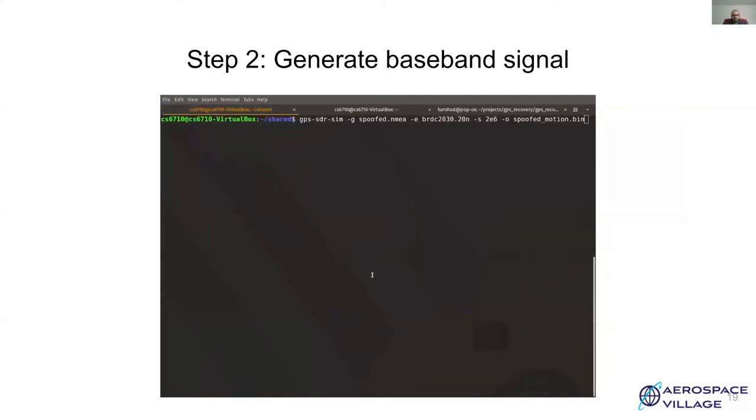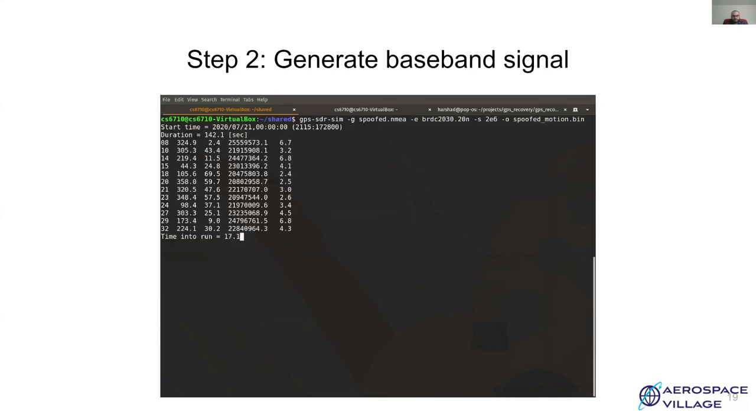In the second step, we'll be using GPS SDR sim for generating GPS baseband data. We need to provide the simulator with the dynamic motion file, which is sampled at 10 hertz, a GPS broadcast ephemeris data, the sampling rate, which is 2 megahertz in this case, as this is the lowest that can be used for GPS. And then we have to provide the name of the output file. Now it will take some time to generate the baseband data. As you can see, this shows the list of satellites that are visible from this location, their azimuth and the pseudo range to that particular satellite. All right, now we have our GPS baseband data. Now over to step three.